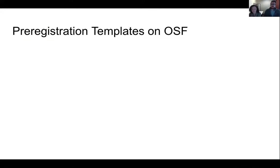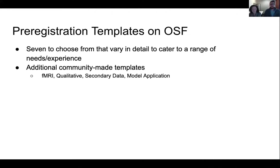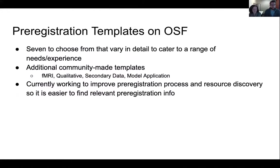We have a variety of templates on the Open Science Framework. We have seven templates that vary in level of detail and rigor to cater to a range of experience or needs. Additionally, we have community-made templates that fill a specific niche or research area — for example, some for fMRI studies, qualitative studies, secondary data analysis, and model application. We are currently working to improve the pre-registration process, helping guide users in choosing which template suits their needs best and making resources more easy to discover.